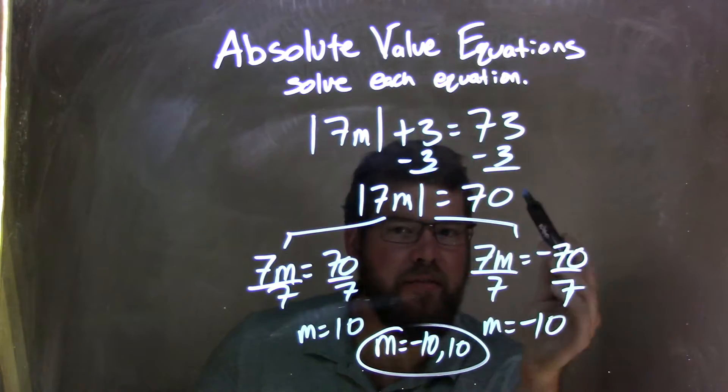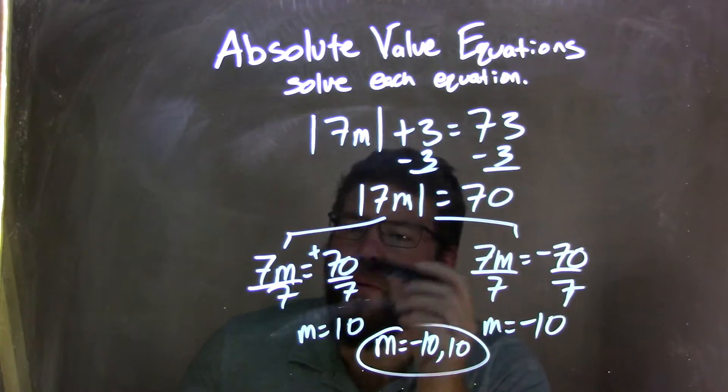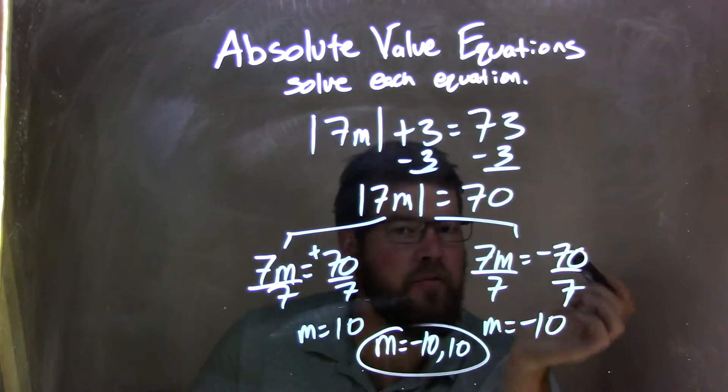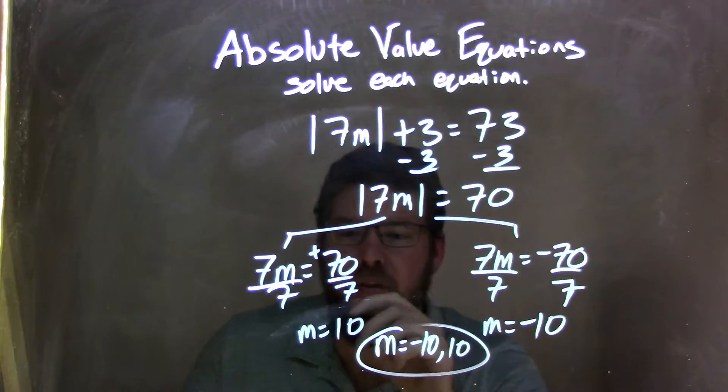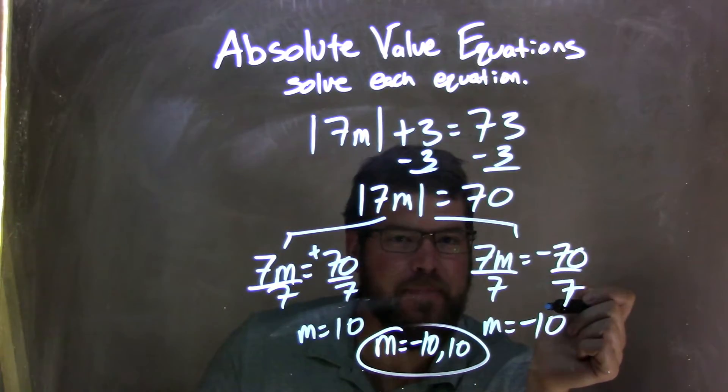And 7m equals negative 70. We take the second part, break it into positive and negative. From there, I divide by 7 on both sides of both equations. Leaving me with m equals 10 and m equals negative 10.